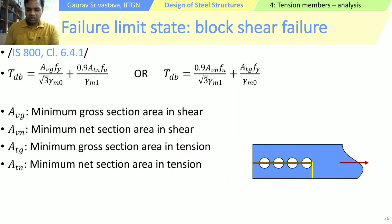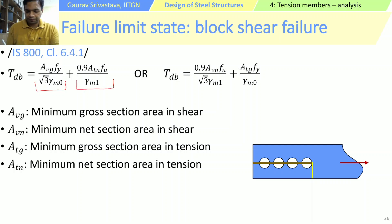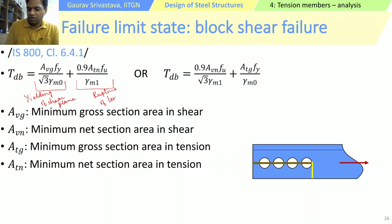In the Indian code, clause 6.4.1 gives the stipulations for block shear failure and considers the two different sequences of events we just discussed. In the first expression, the first term is yielding of the shear plane and the second term is rupture of the tension plane. The second expression is the opposite: the first term is rupture of the shear plane and the second term is yielding of the tension plane.